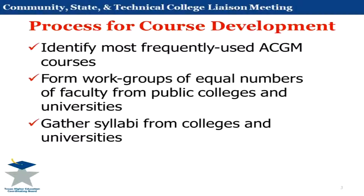That's English 1301 and 1302, college algebra, government, the government and history sequences. Everybody takes these courses — as dual credit, at colleges, at universities. So those were the obvious choices so that we could do the most good with the least work — achieve the greatest ends with the least effort.